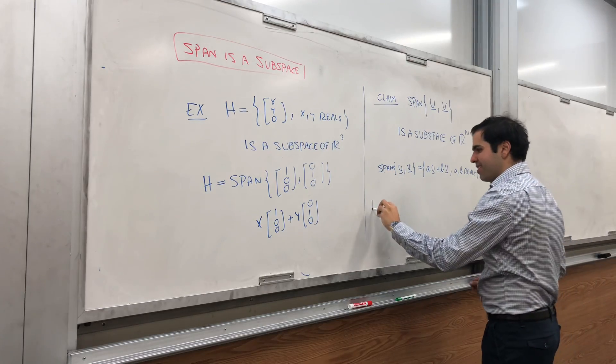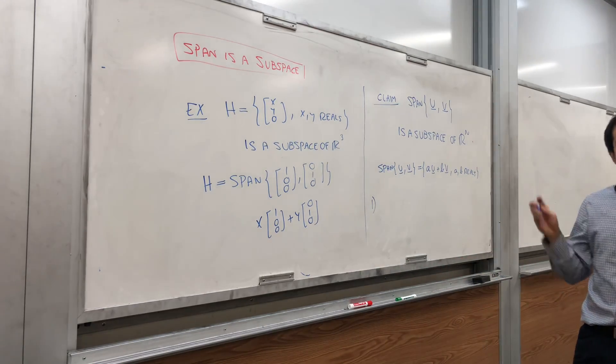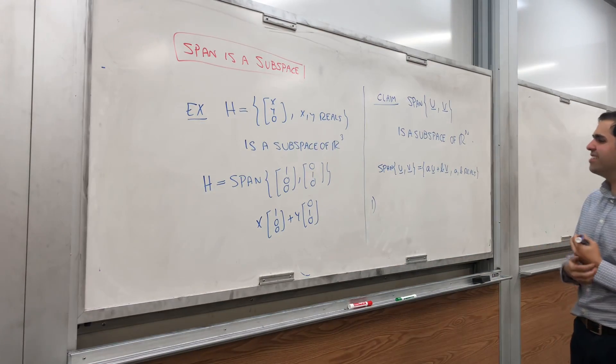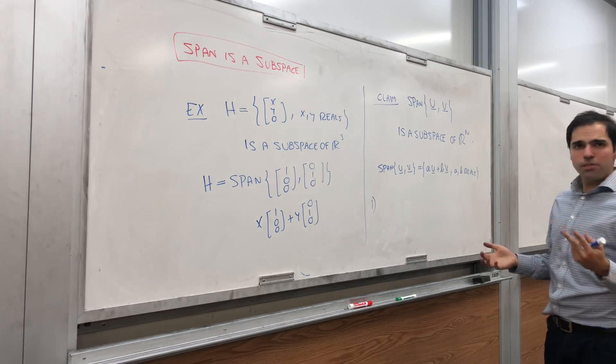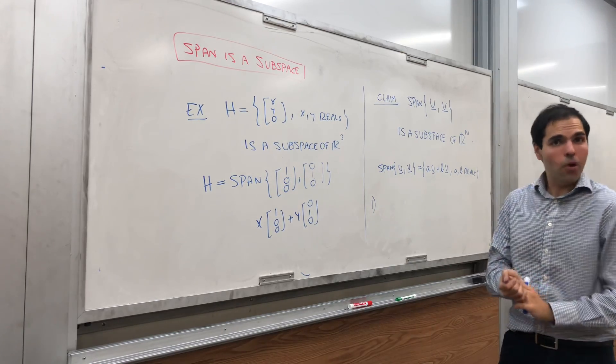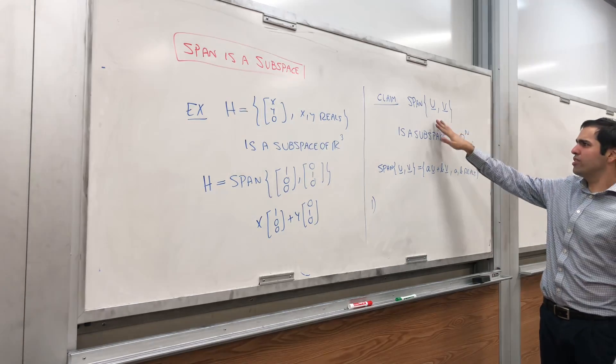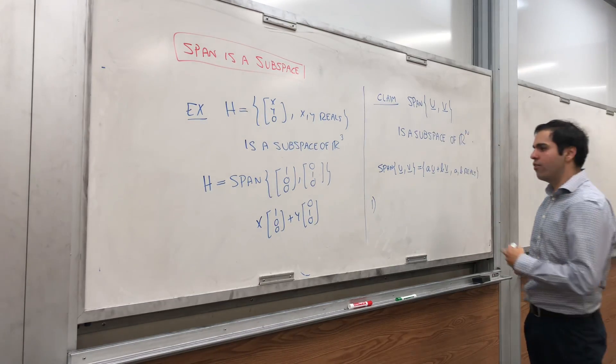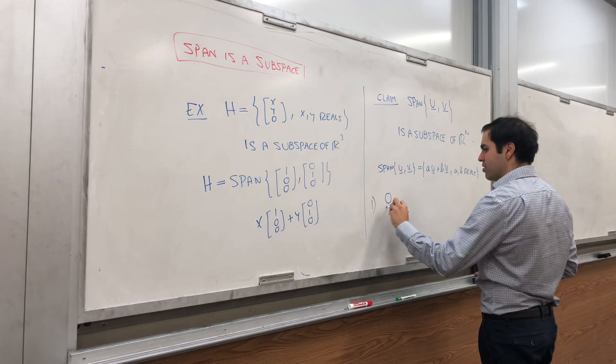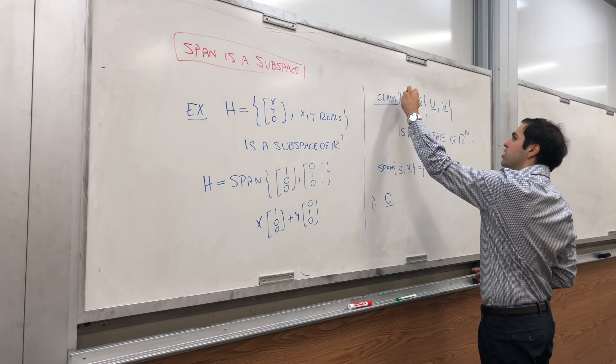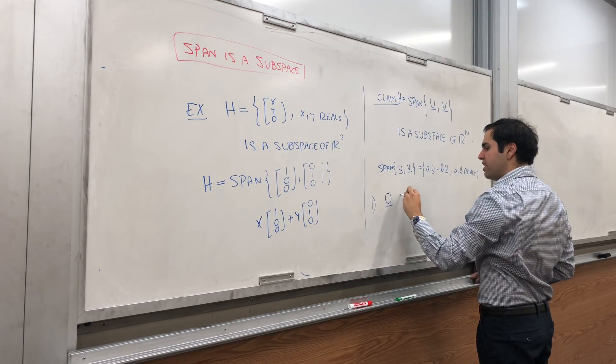Well, at the same time, let me remind you what a subspace is. A subspace has three components to it. Namely, first of all, we have to show that the 0 vector is in h. So let's call this h. First of all, show that 0 is in h.